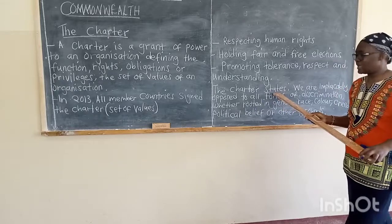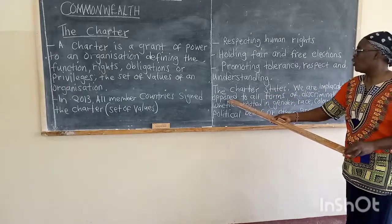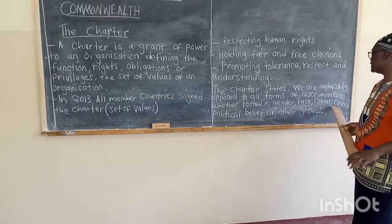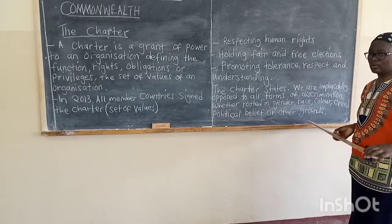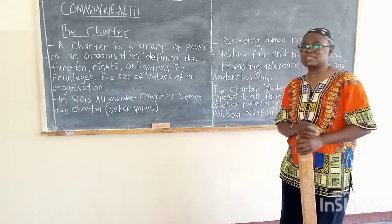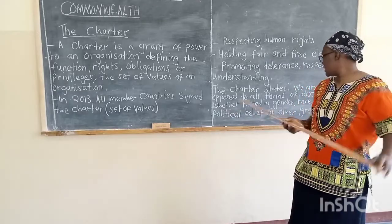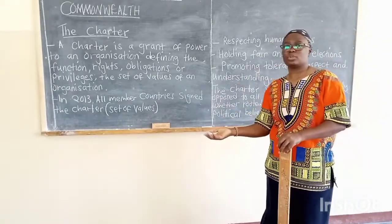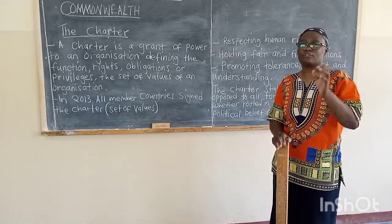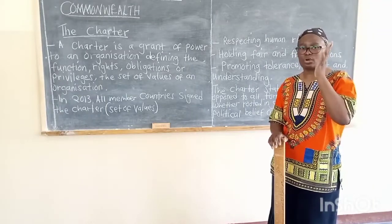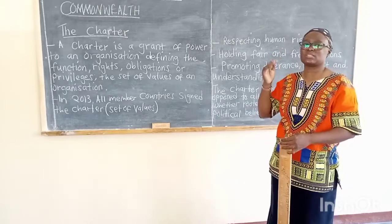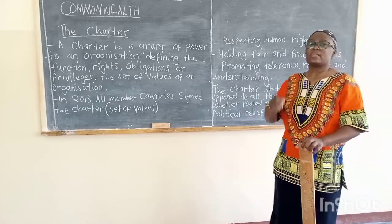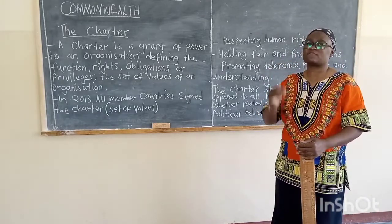The charter states, and I quote: 'We are impressively opposed to all forms of discrimination, whether rooted in gender, race, color, creed, political belief, or other grounds.' This means you don't need to discriminate anyone. Creed means believing in a particular religion — there is no need to discriminate because a person does not belong to your religion, or to discriminate based on gender. In short, the Commonwealth promotes respect for human rights.